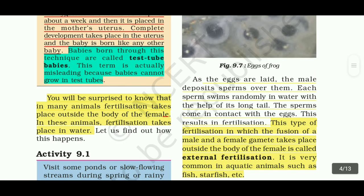This type of fertilization in which the fusion of a male and a female gamete takes place outside the body of the female is called external fertilization. It is common in aquatic animals such as fish, starfish, frogs, and toads.